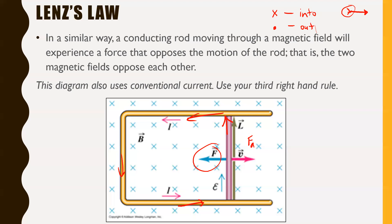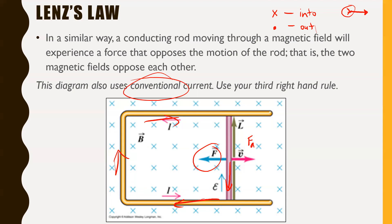In this course, we do not use conventional current — please use electric current and your left hand for these rules. The picture happened to use conventional current, which is why I was showing it; there aren't many good pictures that use actual electron current.